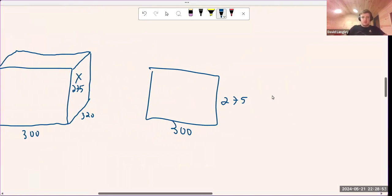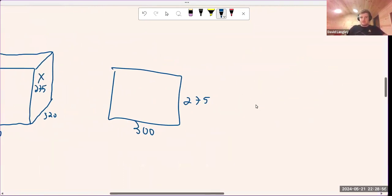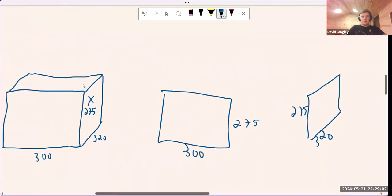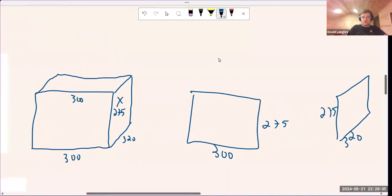And then we have this one here, let me sketch it out the way it is, it's 320 and 275. And then we'll have the ceiling one, which is 300 and 320.